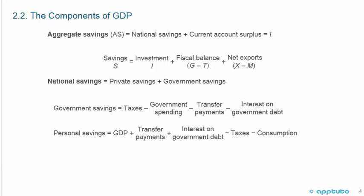National savings equals private savings plus government savings. Government savings equals taxes minus government spending minus transfer payments minus interest on government debt. Personal savings equals GDP plus transfer payments plus interest on government debt minus taxes minus consumption.